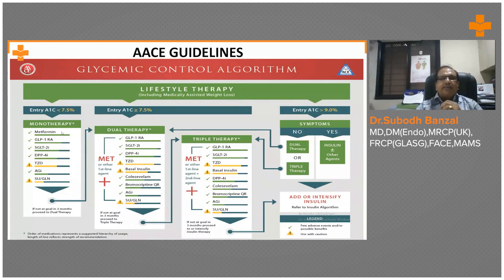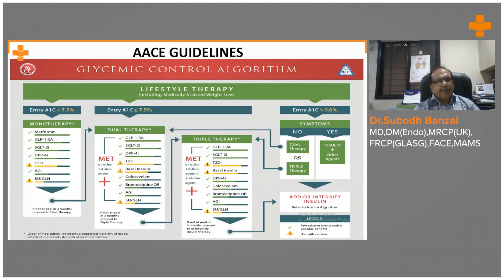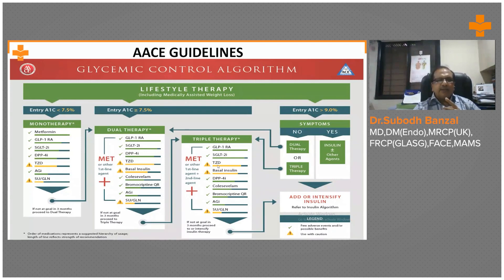For entry-level patients who are symptomatic — losing weight, having polyuria, nocturia — you can go with basal insulin, dual therapy, or triple therapy. Insulin could be added, and if they still have symptoms or don't have symptoms, you can use three drugs. You have to be careful about the side effects of medication: some have hypoglycemia risk, some have weight gain, and some have other problems.